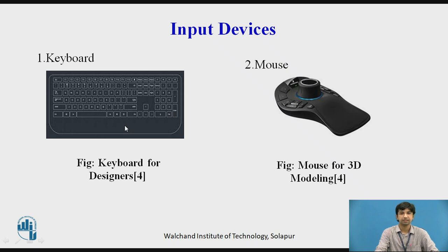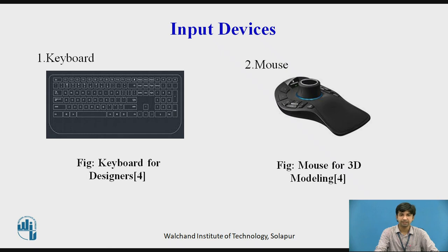Keyboard is the most commonly used input device. It allows data entry into a computer system by pressing a set of keys neatly mounted on a keyboard. It contains some extra command keys and functional keys that affect the operation of the computer or keyboard itself. There are different types: standard keyboard, multimedia keyboard, and wireless keyboard. In graphics, it is used to provide screen coordinates, menu selection, gaming controls, and for entering many graphic functions.